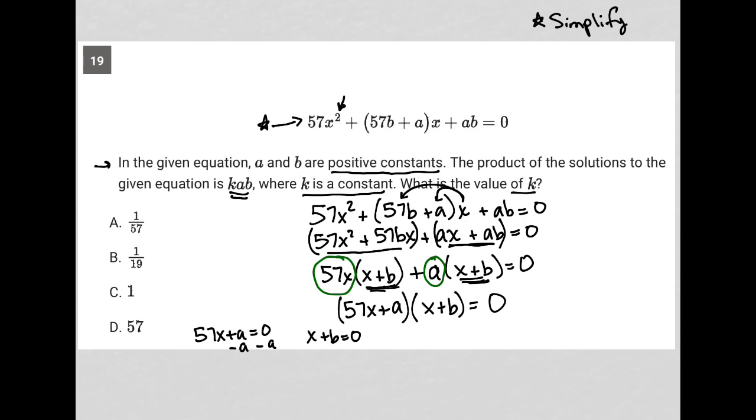So minus A, minus A. 57X equals negative A. Divide by 57. And let's write it up here for more space. X is equal to negative A over 57 is one of my solutions.